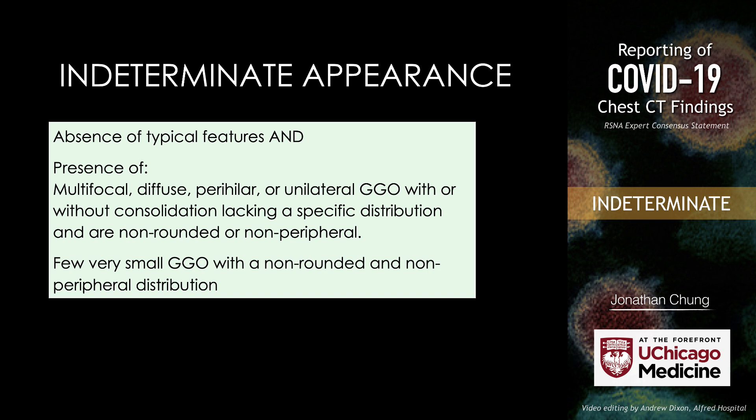The next category is the indeterminate appearance. These are not cases where you're saying the patient has been ruled out or it's unlikely. These are cases where it's not a high pretest probability based on imaging in the sense that these imaging patterns have not been described as much in the literature, but you would still be suspicious. I think that comes through in the reporting language. I encourage you to look up that article in Radiology Cardiothoracic Imaging — pretty easy to find.